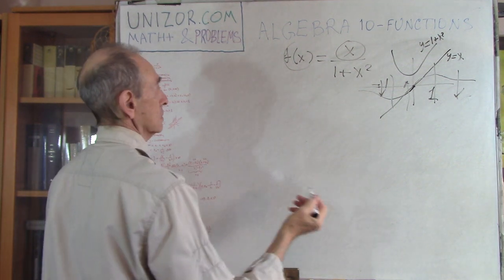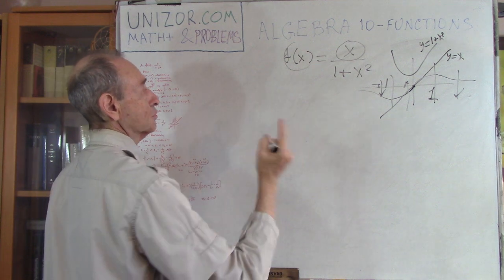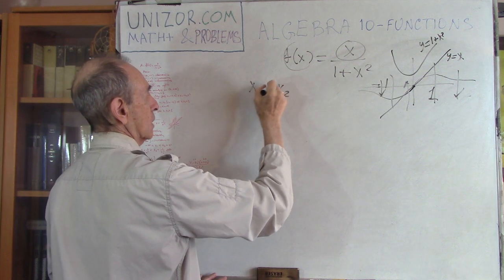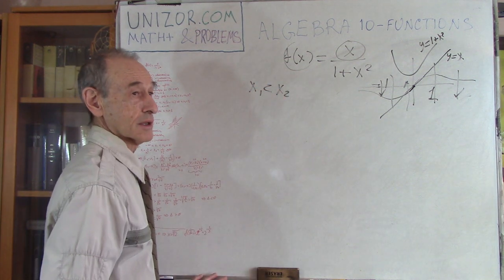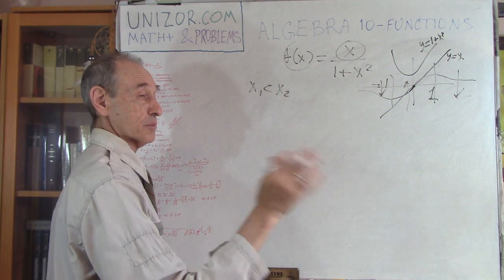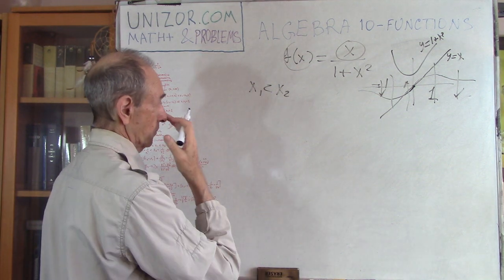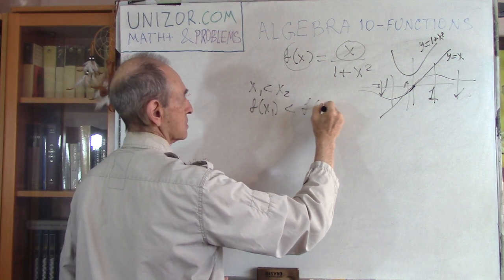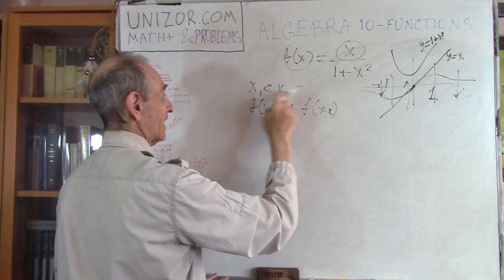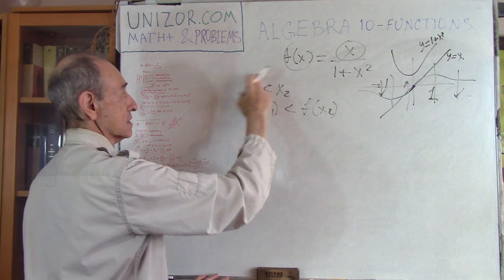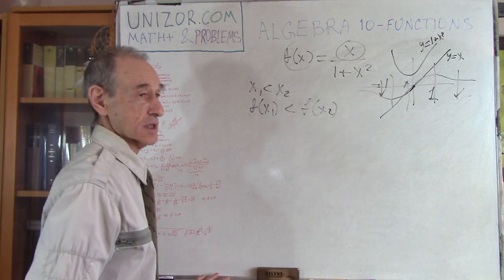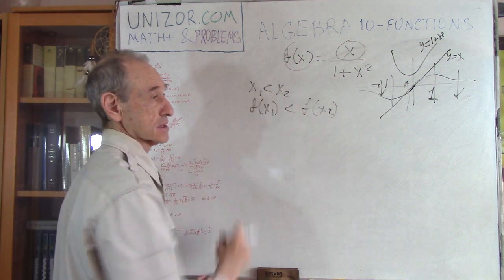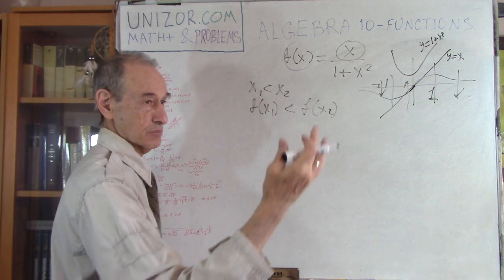Let's start from a very simple thing: how to prove that the function is increasing. We take two values x1 and x2, with x2 greater than x1 — it doesn't matter if they're positive or negative. If f(x1) is less than f(x2) for any x1 and x2 satisfying this condition, then the function is increasing. That's what increasing means.